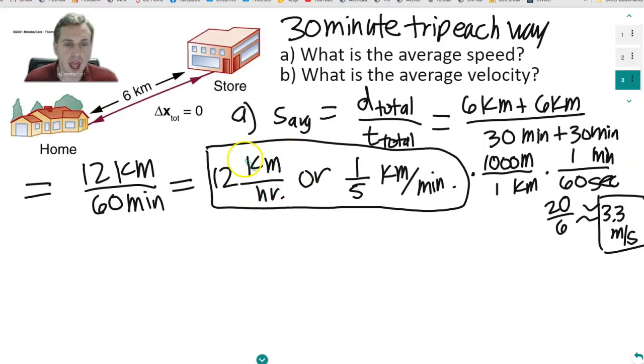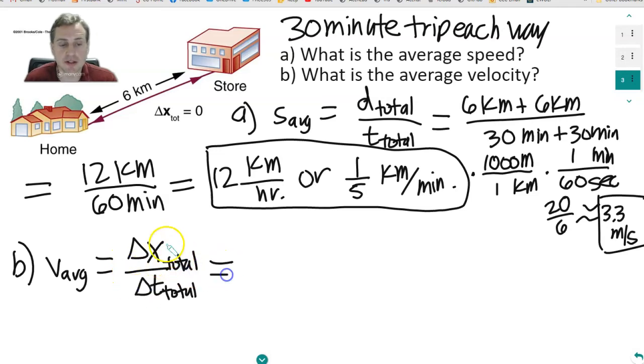Then, how about what is the average velocity? Well, the average velocity is going to be the total displacement over the total time. The total displacement is going to be the displacement of each time, there and back. Now, it probably makes the most sense to set up an x-axis this way from home towards the store.